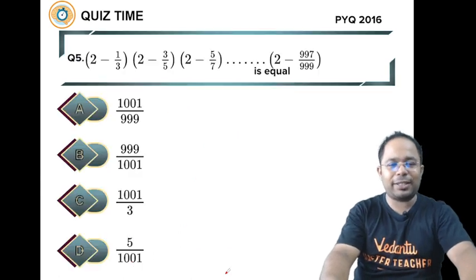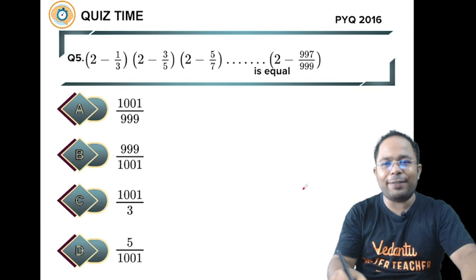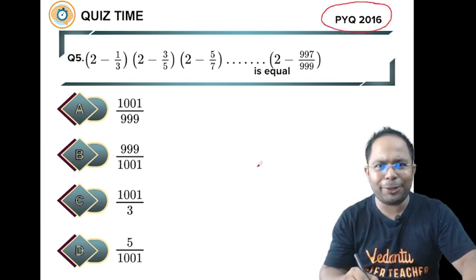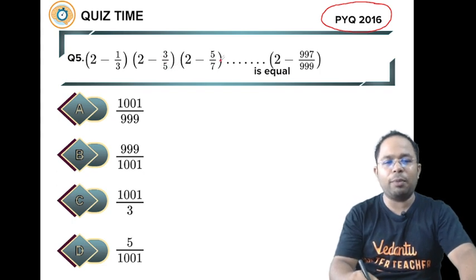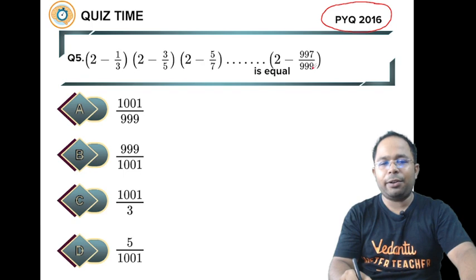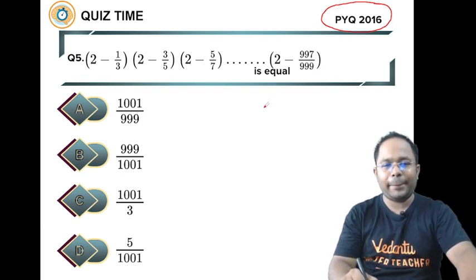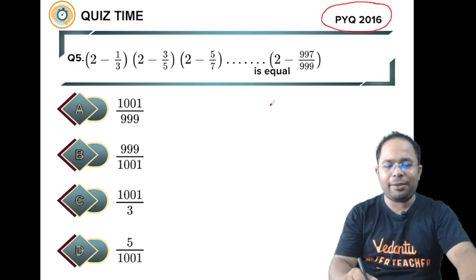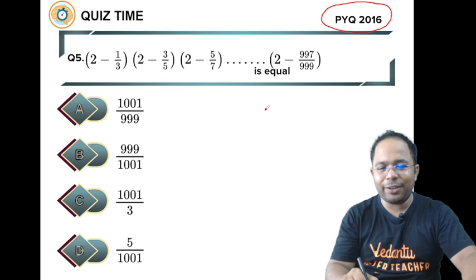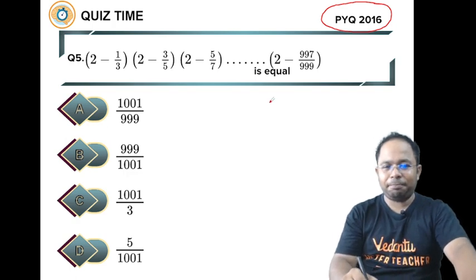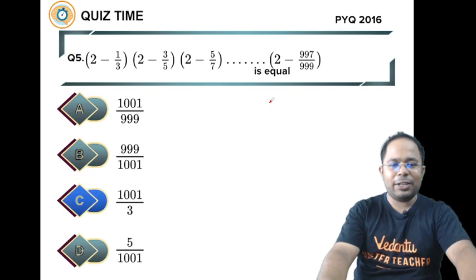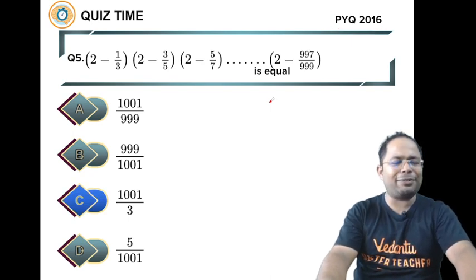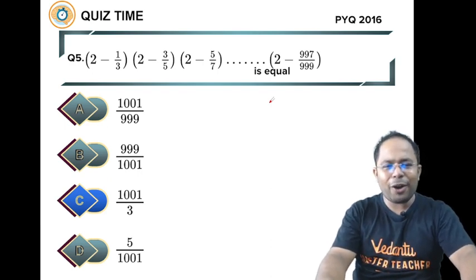Let's move on to the next question. This is from 2016, a very nice question. 2 minus 1 by 3, into 2 minus 3 by 5, into 2 minus 5 by 7, dot dot dot, 2 minus 997 by 999 is equal to. Click the pause button and write on the chat box which option you are getting a, b, c or d.